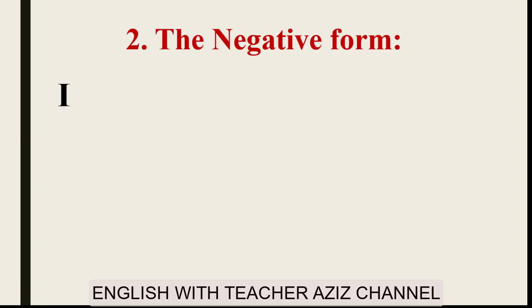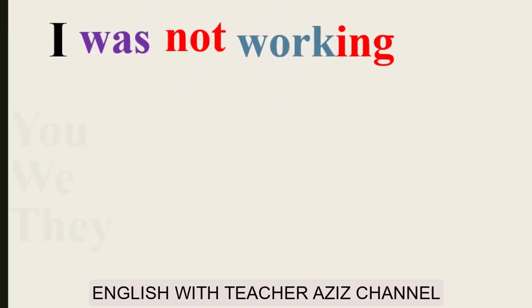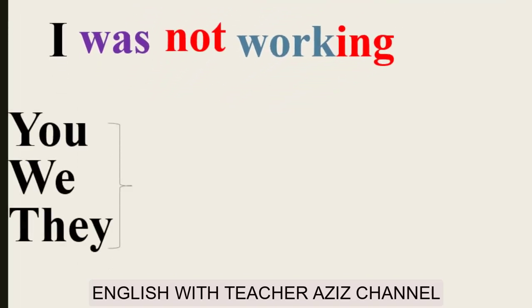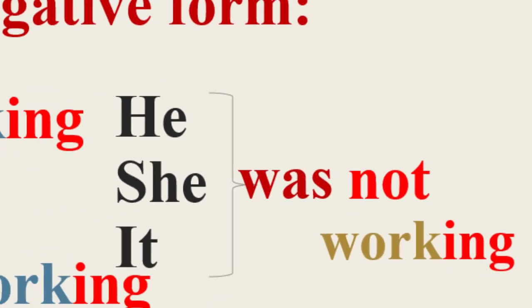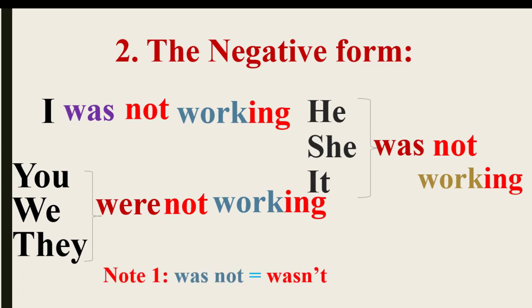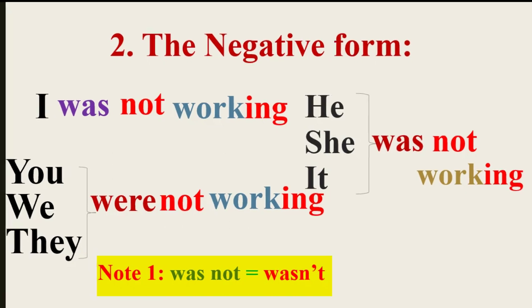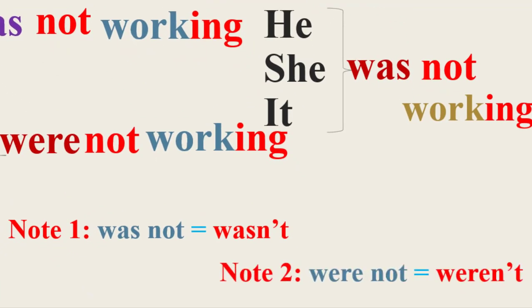Negative form: I was not working. You, we, they were not working. He, she, it was not working. Note one: 'was not' is the long form; the short form is 'wasn't.' Note two: 'were not' is the long form; the short form is 'weren't.'